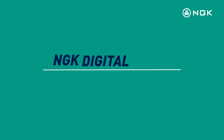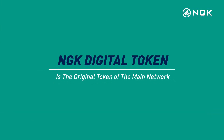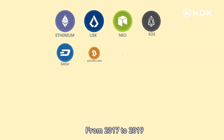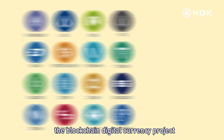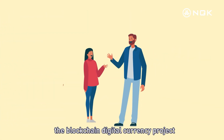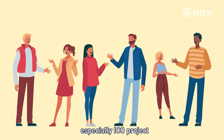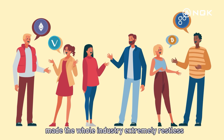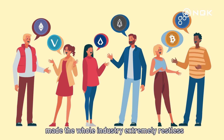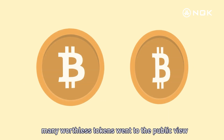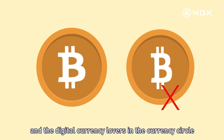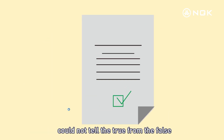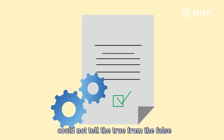Fifth, NGK.IO is currently the first main network governance for economic rights and interests on the blockchain. NGK digital token is the original token of the main network. From 2017 to 2019, the blockchain digital currency and ICO projects made the whole industry extremely restless, with many worthless tokens entering public view.